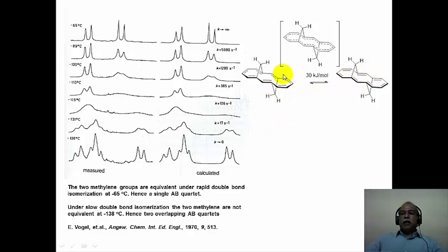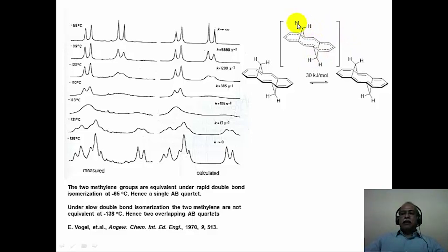Under the rapidly interconverting state, NMR would see a structure very similar to a symmetrical structure with a C2 axis of symmetry passing through two carbons. The two methylenes are exchangeable by means of the C2 axis of symmetry and hence are identical in terms of their chemical nature. However, within each methylene, the two hydrogens have different chemical environments - so for each methylene one sees only one AB quartet. At minus 65 degrees, only one AB quartet is seen.